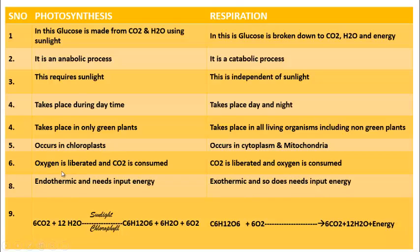In photosynthesis, oxygen is liberated and carbon dioxide is consumed. Plants are taking carbon dioxide and giving out oxygen. But in respiration, the reverse is happening — carbon dioxide is liberated and oxygen is consumed. Oxygen breaks down the glucose into carbon dioxide, so carbon dioxide is liberated and oxygen is consumed.